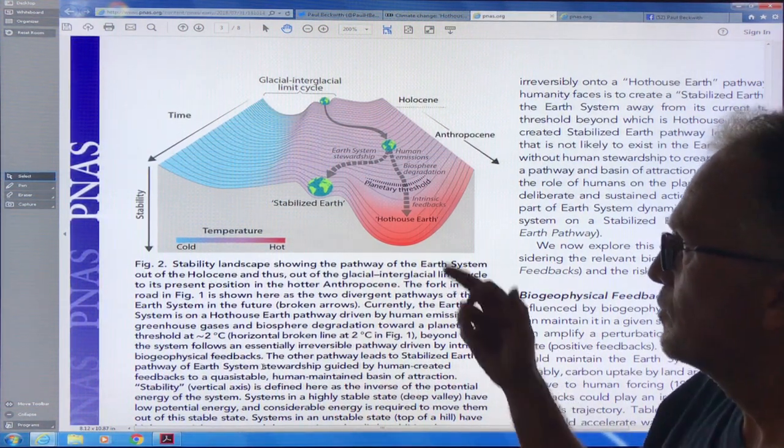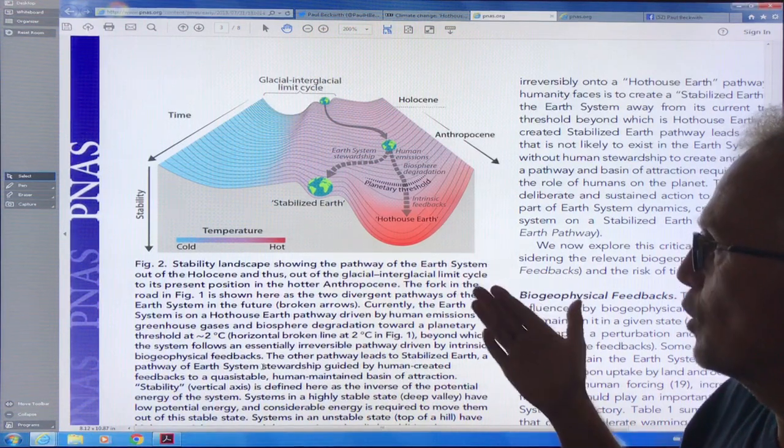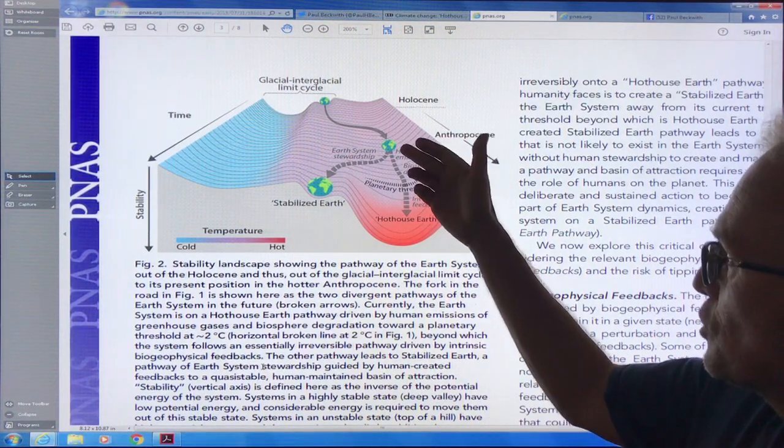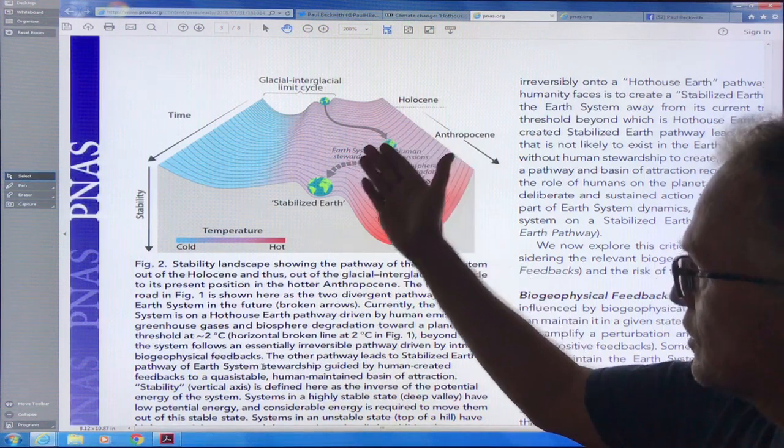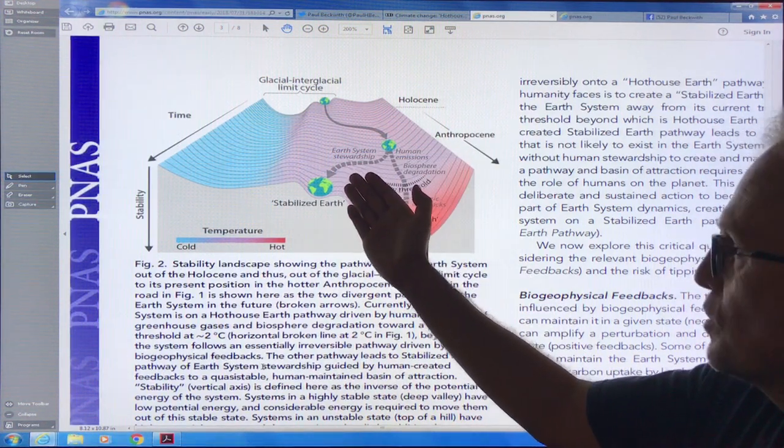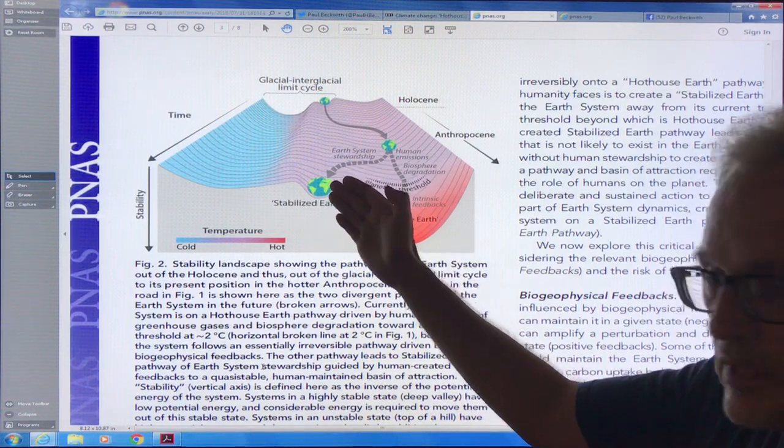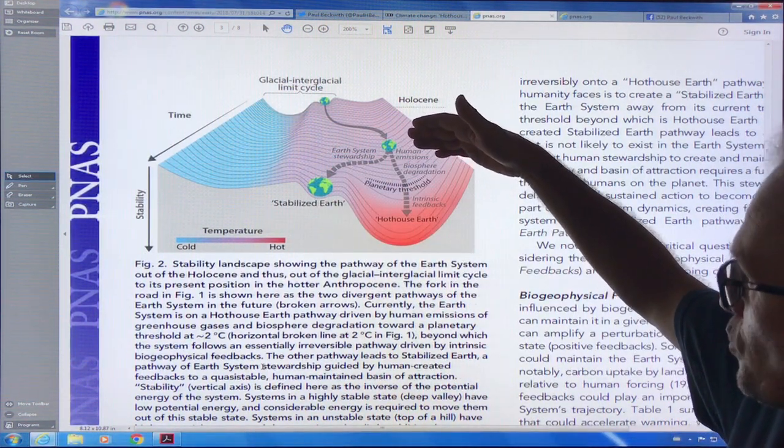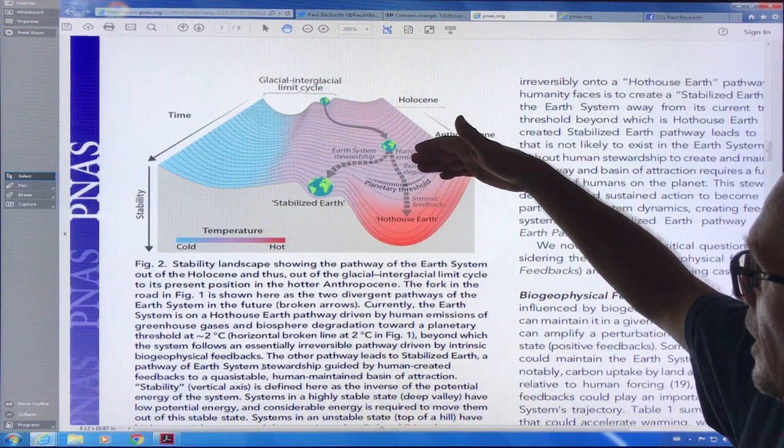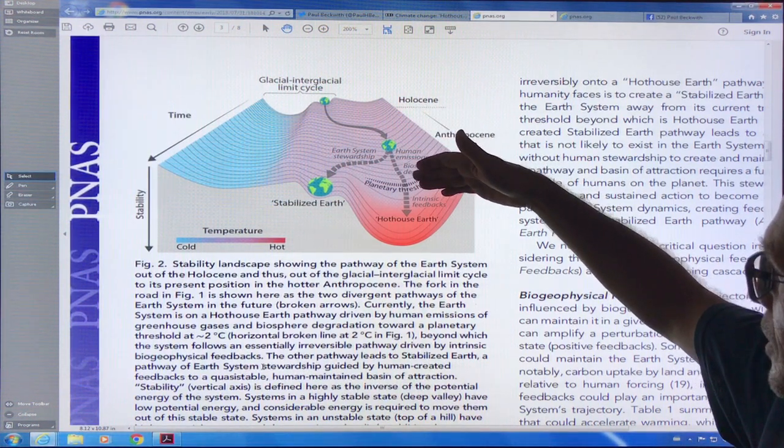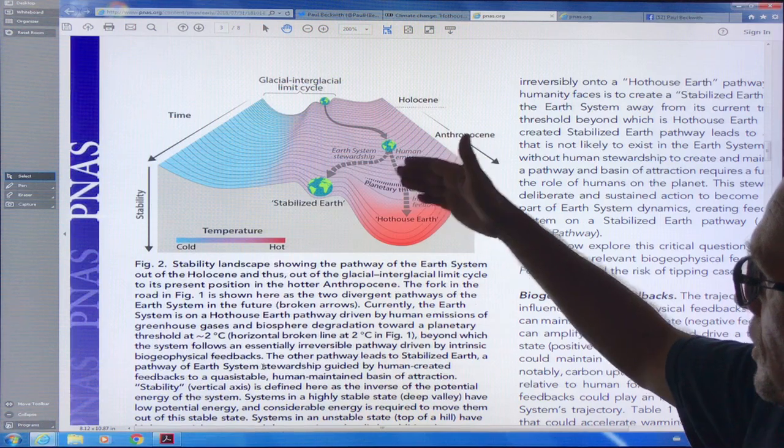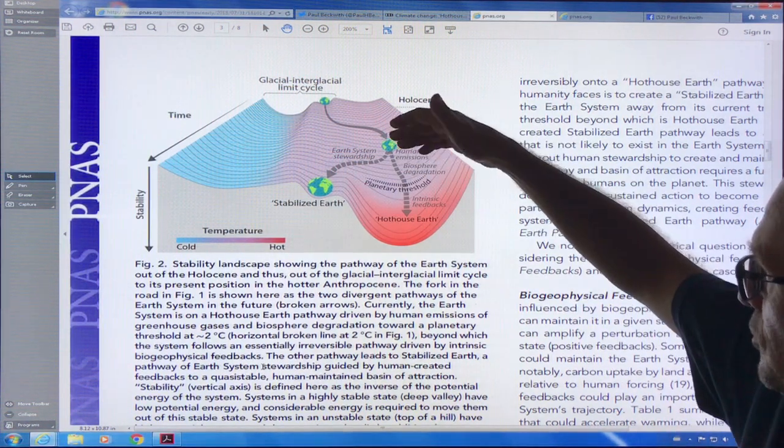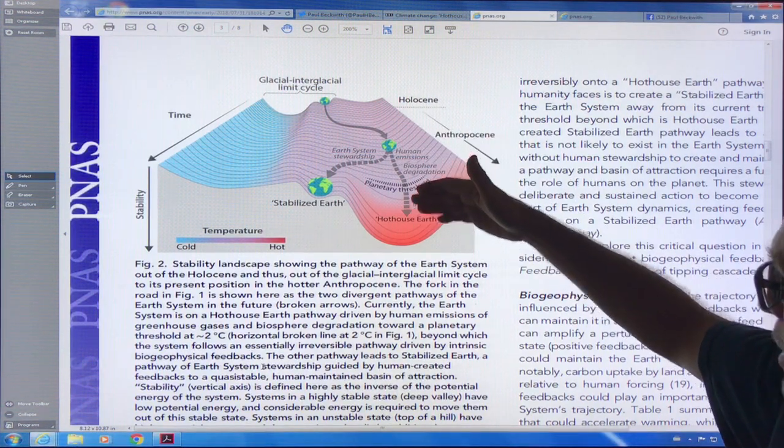What's happened is, as time comes out this way, we've been moving away from this zone of stability, we've been moving away from these glacial-interglacial cycles, and we're sitting right here. Human emissions have carried us there. If we can declare a global climate emergency and all hands on deck to demonstrate Earth system stewardship, we can try to bring ourselves back to a stable position.